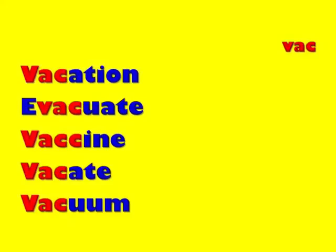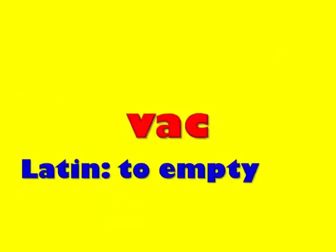The next root word on our list is the root word vac. Think of any words in English that contain the root word vac. All of the following words contain the root word vac. See if you can infer or decode the most likely meaning of the root word vac. Vac is a root word that comes to us from Latin, and it means to empty.